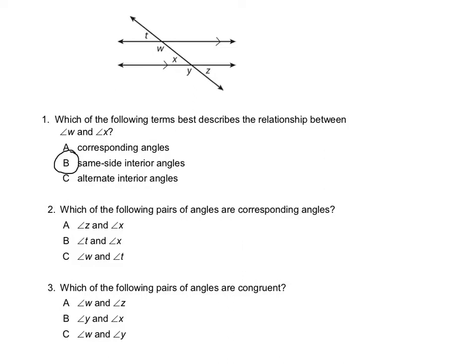Now we want to know which of the following pairs of angles are corresponding angles — that's same side, same position. We have angle Z and X; those are on opposite sides of the transversal, so they're not same side. So we know it can't be A.